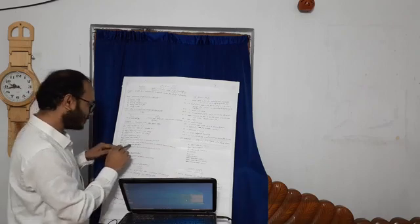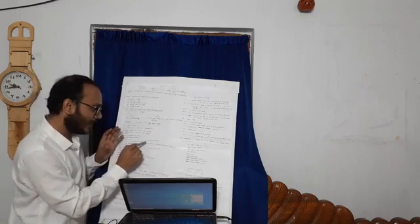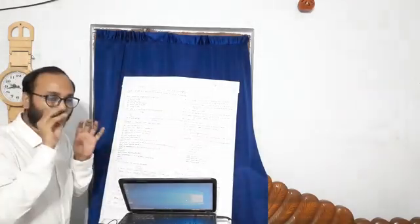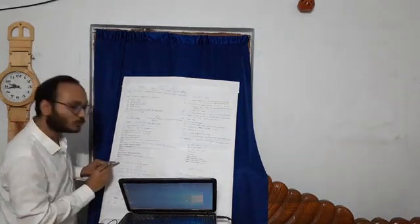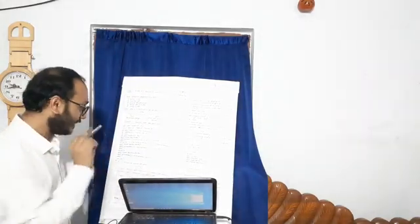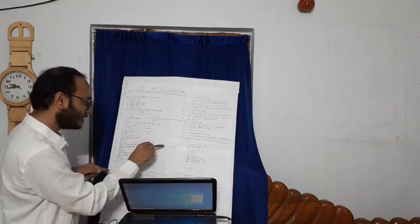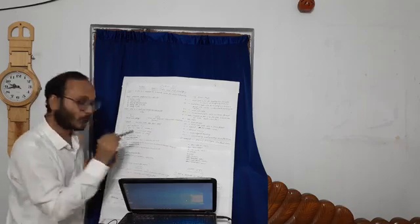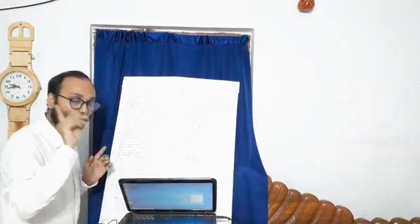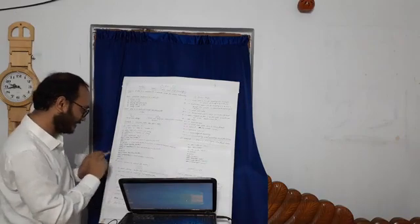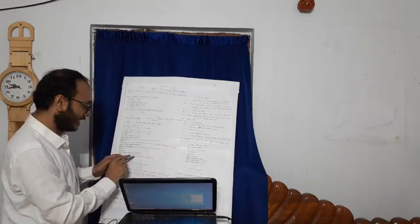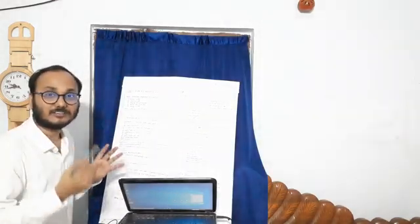The seek() function changes the file position to an offset in reference to the start, current, or end of the file. The tell() function only returns the current file location, while seek() can return start, current, and end positions. The readline() function reads and returns one line from the file. The readlines() function reads and returns a list of all lines from the file.